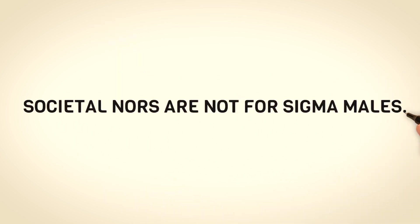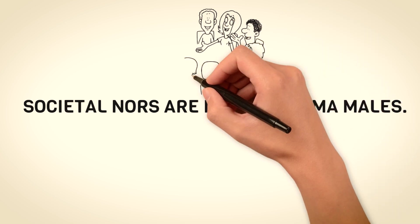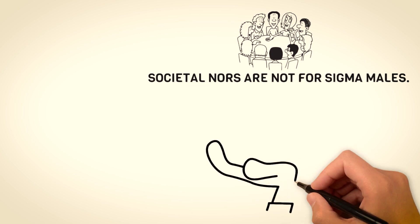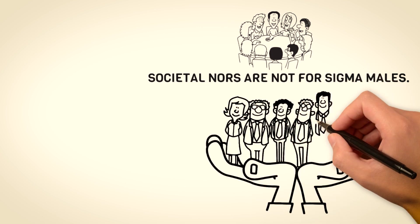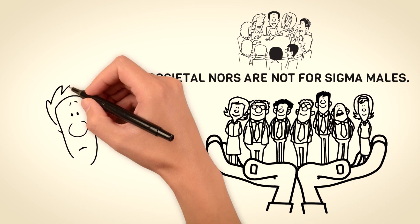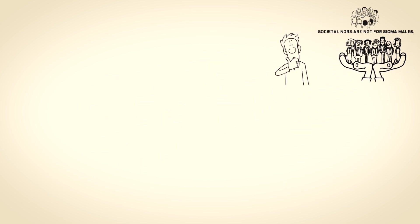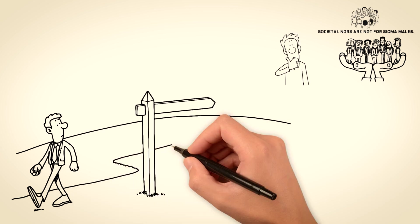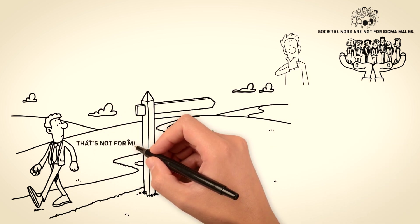Aversion to conformity and societal norms: Sigma males prefer the shadows because of their aversion to conformity and societal norms. They possess an independent streak that rebels against the pressures to conform and fit into predefined roles. Instead, they forge their own path, embracing their unique interests, passions, and lifestyle choices. By avoiding the spotlight, they can remain true to themselves and focus on personal growth and self-discovery without the burden of societal expectations.